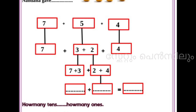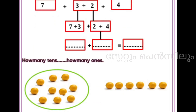Then 10 plus 6 — it's simple. 6 fingers: 11, 12, 13, 14, 15, 16. Okay? Then we get the total answer: 16 lemons. The next: how many tens, how many ones?